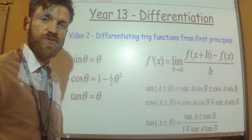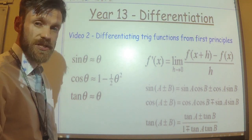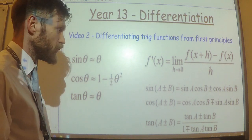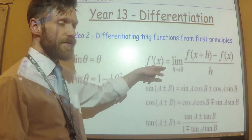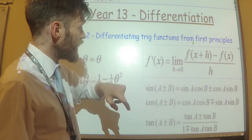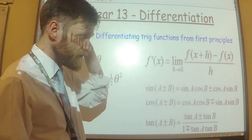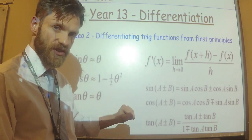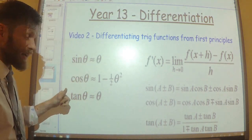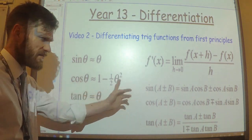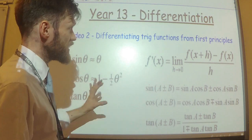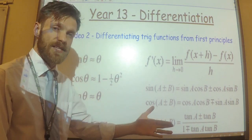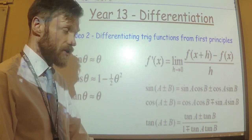In this video we're going to see how we can differentiate the trigonometric functions from first principles. To do this you need to think back to the work on differentiation from first principles and that formula you learnt when we first did differentiation. We'll also use the addition formulae from the advanced trigonometry unit and the small angle approximations. We're going to use these to differentiate sine and cos, and then at the end of this video we'll talk about the other trigonometric functions.